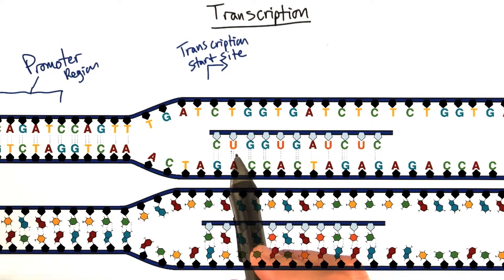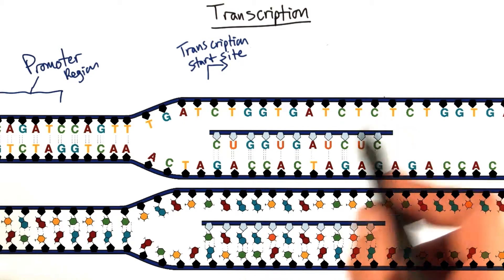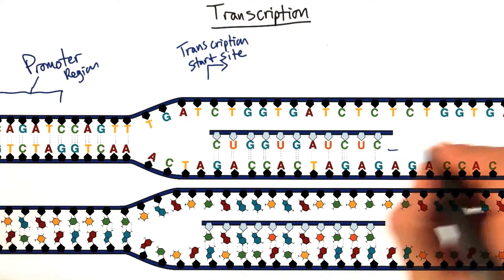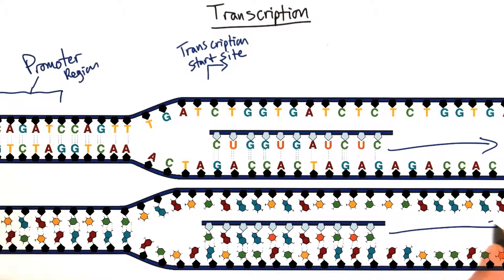And at this point, individual RNA nucleotides are going to be brought in and matched with the DNA, one by one. And this will continue until we reach the end of the gene.